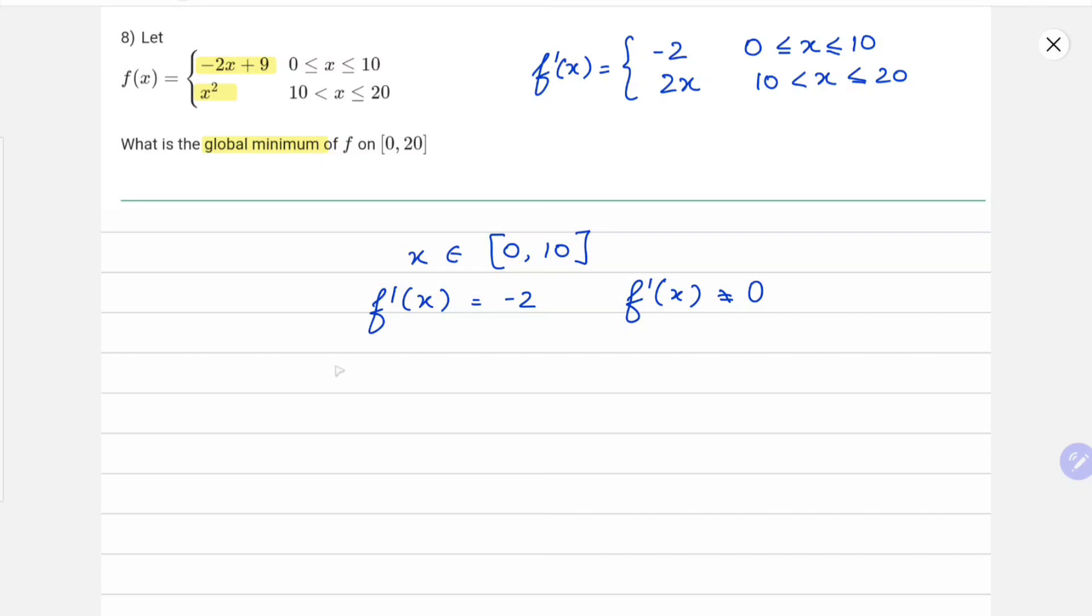Similarly, for x belonging to [10, 20], 2x could be 0 at x = 0, which is not in the domain. So there are no critical points in this range either.